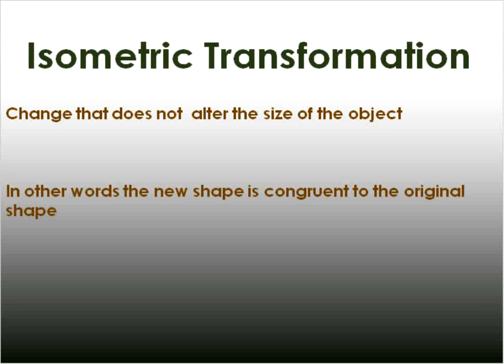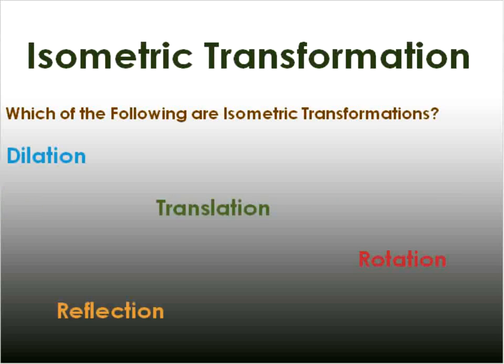One more part about transformation, and that is the isometric transformation. These are changes that do not alter the size of an object. In other words, the new shape or the image is congruent with the original shape or the pre-image. If the image is congruent with the pre-image, then you have what we call an isometric transformation. So let's go ahead and pick out some isometric transformations.